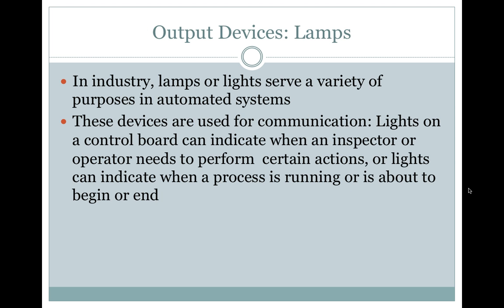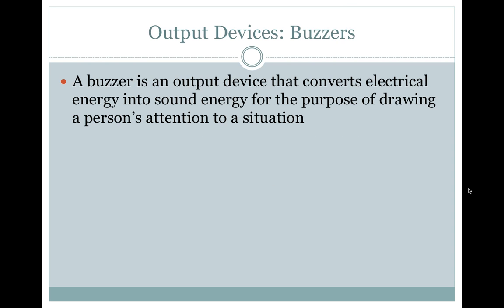Lamps. In industry, lamps or lights serve a variety of purposes in automated systems and are used for communication. Lights on a control board can indicate when an inspector or operator needs to perform certain actions, or indicate when a process is running or is about to begin or end. Buzzers. A buzzer is an output device that converts electrical energy into sound energy for the purpose of drawing a person's attention to a situation.